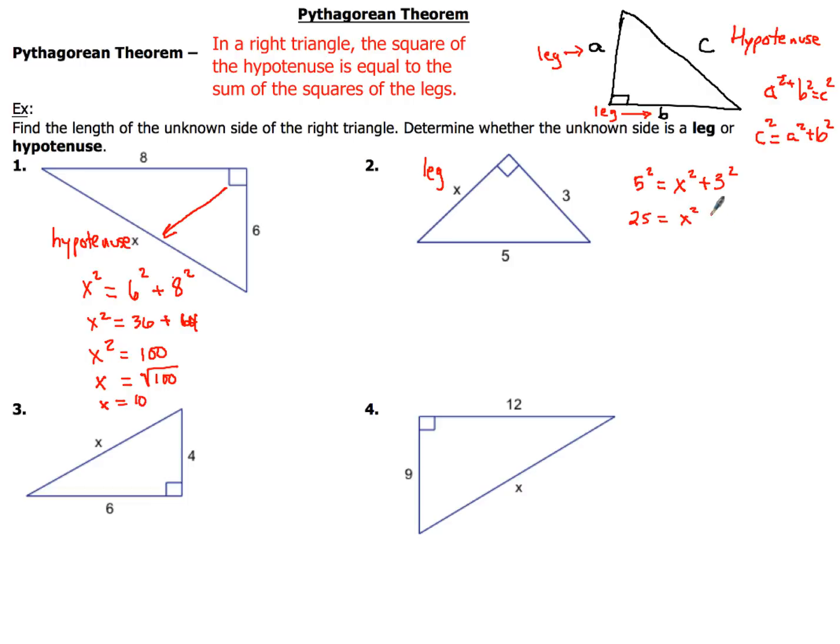Now 5 squared is 25, no big deal. X squared, we're trying to figure that out. And then plus 3 squared is 9. If I subtract 9 on both sides, I get 16 for X squared. Now again, I want to take the positive square root of 16. I don't have to worry about the negative one, because I'm dealing with distance, and that's gonna give me the value of X. And the square root of 16, of course, is 4. Bam! Pretty straightforward stuff.